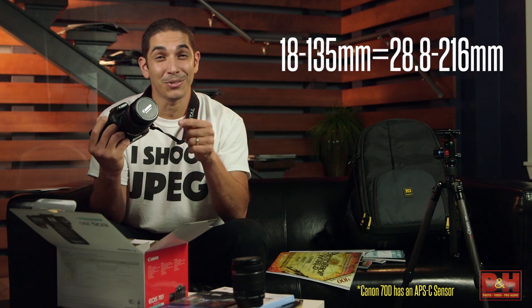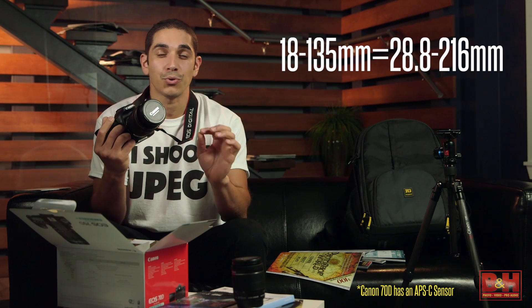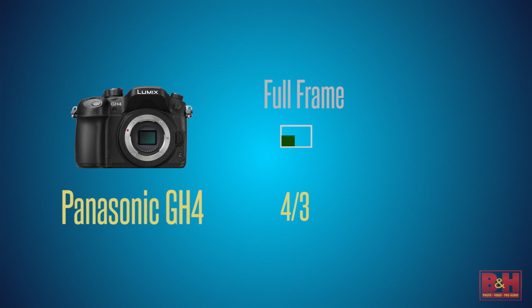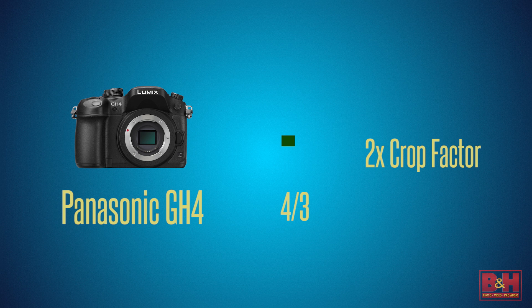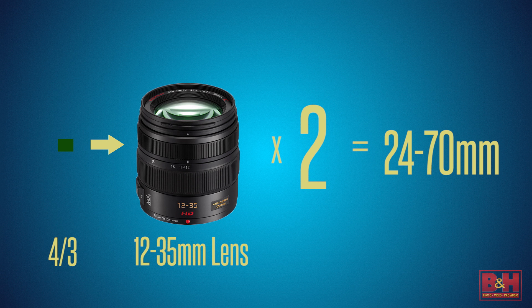So this 18-135 zoom on my Canon 70D is going to act like a 28.8 to 216 millimeter lens. And since the crop factor gives you an idea of what field of view would be equal to in terms of a full frame camera — and that is equal to a 35 millimeter film negative — they should call it a 35 millimeter equivalent. You'll often hear the crop factor adjusted number referred to as 35 millimeter equivalent. Some mirrorless cameras with Four Thirds sensors have a 2 times crop factor, so you just double the millimeter number to get your new 35 millimeter equivalent.